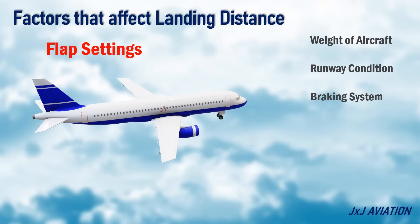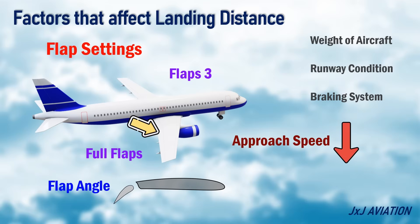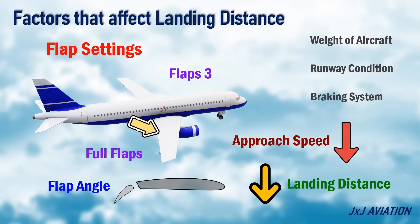Flap Settings. The aircraft may have different flap settings available for landing. In general, a higher flap setting means the flap deflection angle will be more and the approach speed reduces, so the landing distance decreases with an increase in the flap setting.